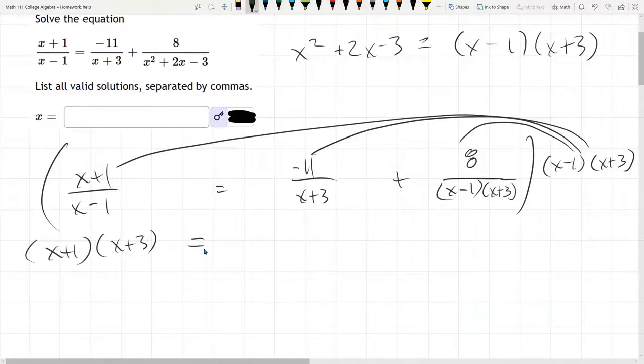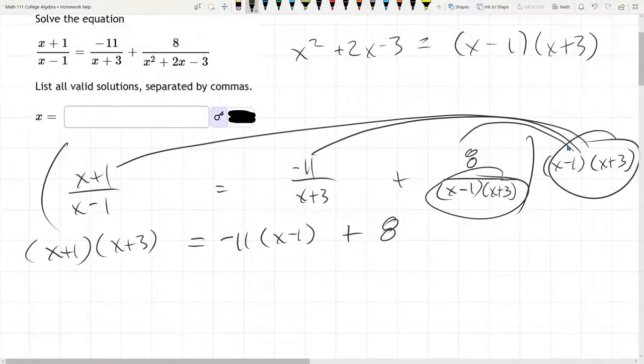Now the right side, this term cancels the x plus 3. And so it's just times numerator times x minus 1 plus. On the right, the denominator cancels both of those. And so we're just left with plus 8.